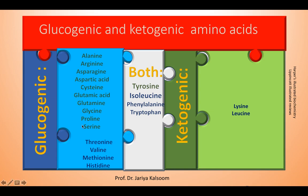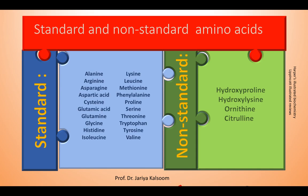Amino acids whose catabolism yields either acetoacetate or one of its precursors, acetyl-CoA or acetoacetyl-CoA, are termed ketogenic. The standard 20 amino acids are the only amino acids encoded by DNA and are commonly found in mammalian proteins. Non-standard amino acids are produced by chemical modification of standard amino acids. For example, collagen contains hydroxyproline and hydroxylysine. Ornithine can be generated during catabolism of glutamate, and citrulline can be generated when arginine is cleaved to release urea. Both are basic amino acids with no codons, and hence fall in the category of non-standard amino acids.